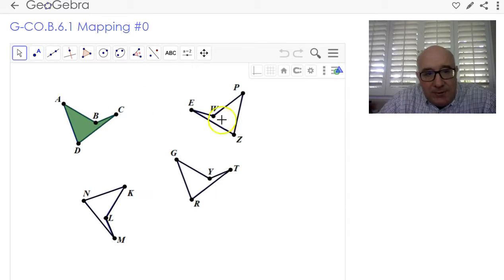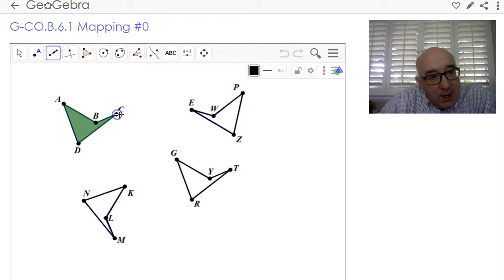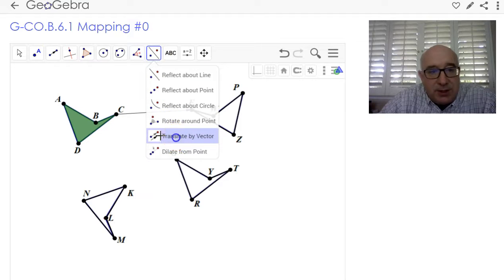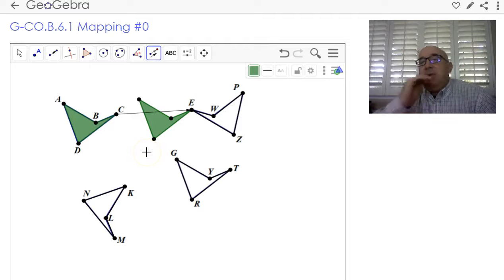So you and I did a reflection directly here to here. What happens though, if I first created a vector, let's say from C to E, and translated our guy over there? So let's translate this shape by that vector. Now it places it here.